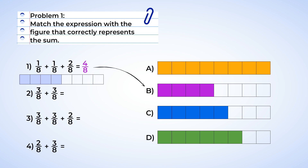Moving on down to number two. Three-eighths plus three-eighths. Let's start by filling in three sections, then we fill in another three, and we have six sections or six-eighths filled in. And that matches with D.